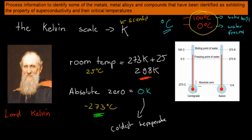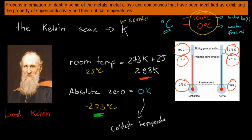So absolute zero equals minus 273 degrees Celsius. Zero degrees Celsius equals 273 Kelvin, and 100 degrees Celsius equals 373 Kelvin. You don't need to know all of this, but you do need a rough idea of what Kelvin is because you're going to deal with Kelvins when it comes to superconductors. The Kelvin scale was named after Lord Kelvin who invented it.